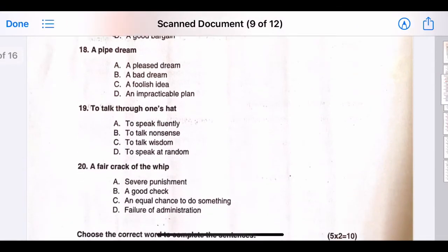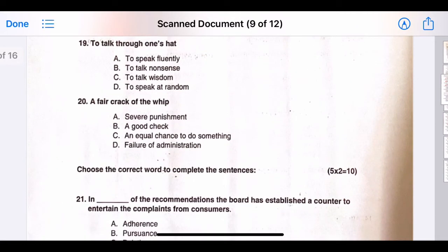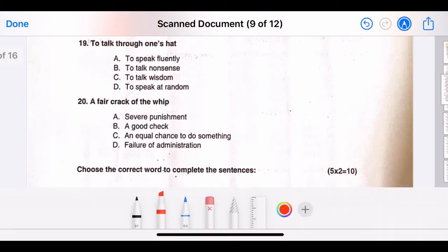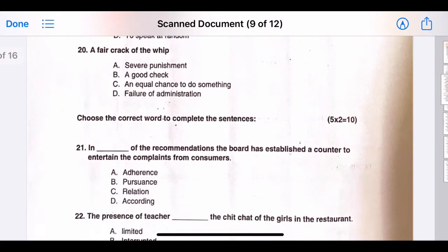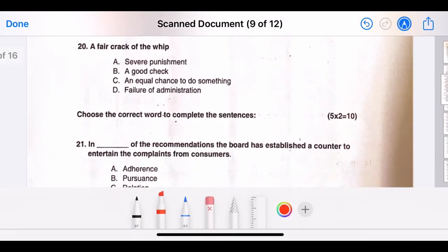Eighteen, a pipe dream. The correct answer is option D, that is an impracticable plan. Nineteen, to talk through one's hat. The correct answer is option B, to talk nonsense. Twenty, a fair crack of the whip. The correct answer is an equal chance to do something, that is option C.